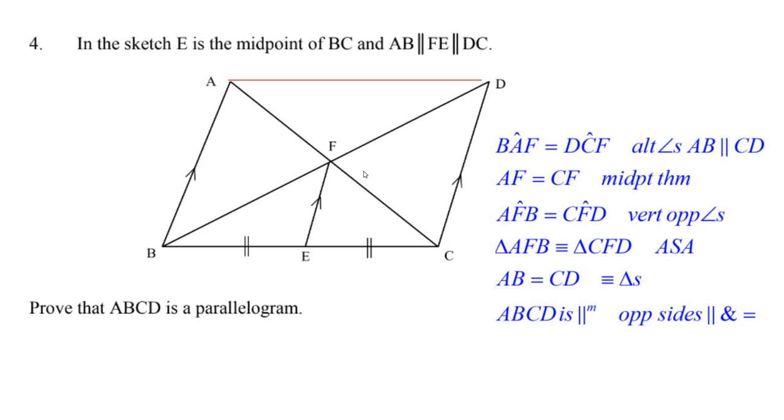And we know that these two angles here are equal. Oh, so we've got this side is equal to this side. Remember I said the midpoint theorem? We've got this angle is equal to this angle. We have vertically opposite angles.